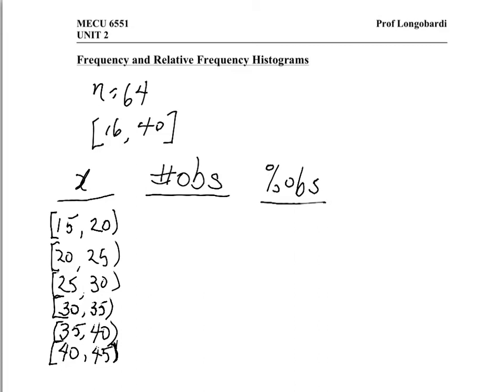And step four explains the difference between them. If you're going to use the columns of the number of observations, then what you've calculated are the bars, the height of the bars for a frequency histogram. If you're going to use the percentage observations, then the height of the bars is going to be indicated by the percentage of observations. And what you will have is a relative frequency histogram.